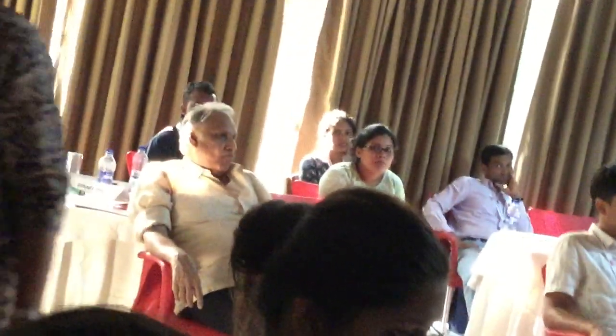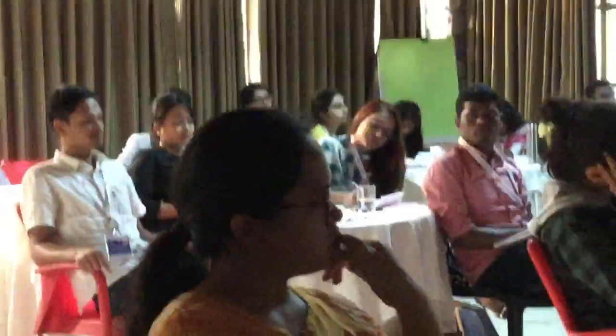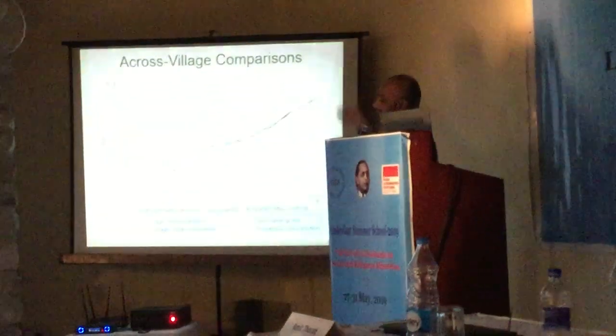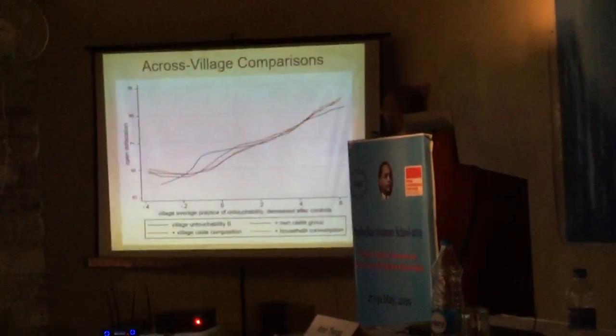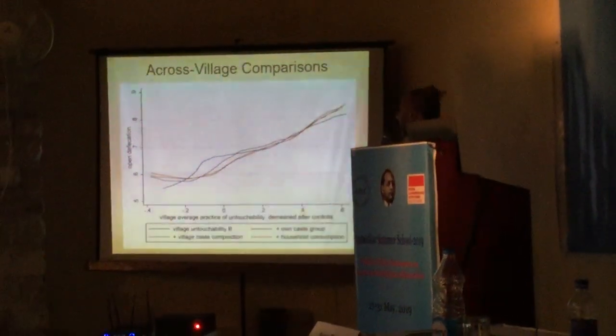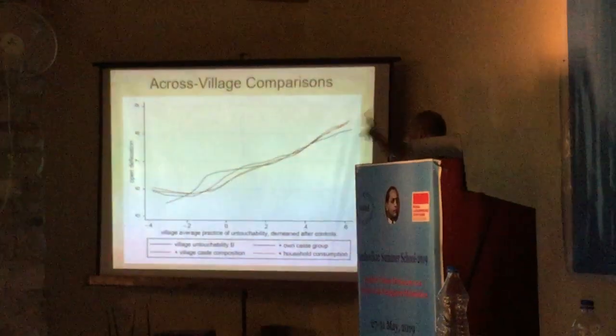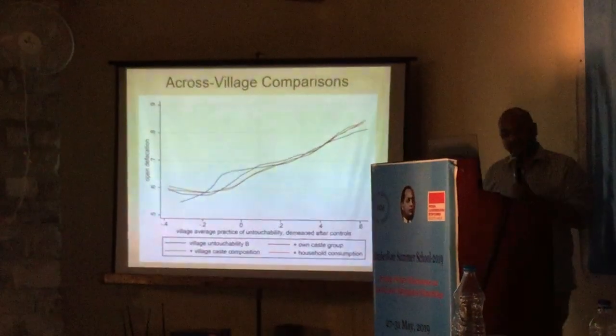At the village level, when we look at the association between village-average practice of untouchability and open defecation, controlling for village caste composition, income, and other variables, we find that as untouchability practice increases in a village, open defecation also increases — consistently across different model specifications.